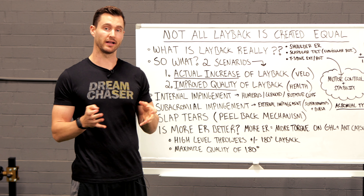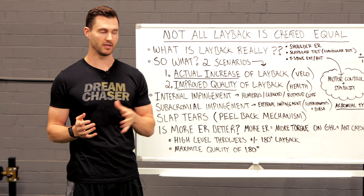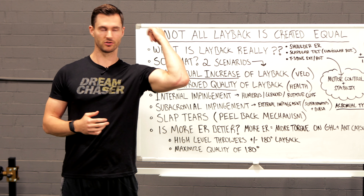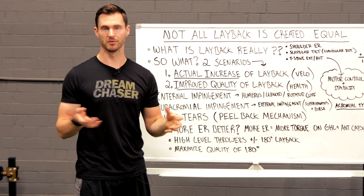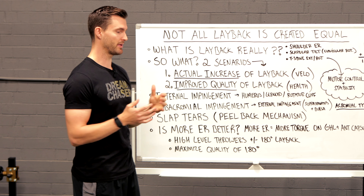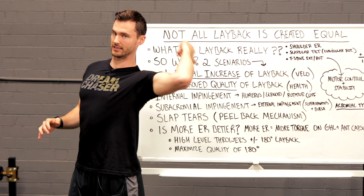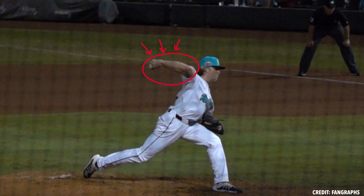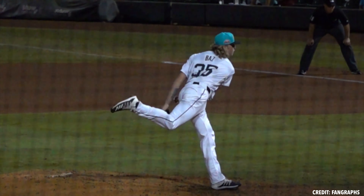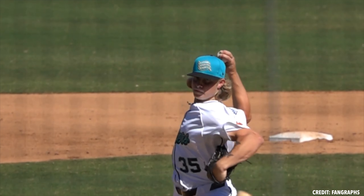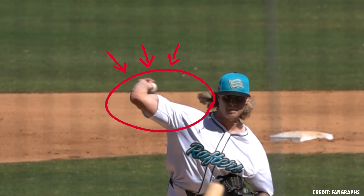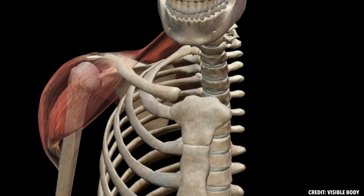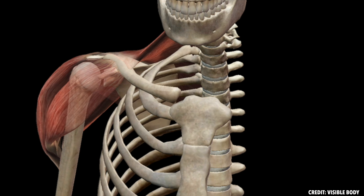We need to understand that layback is actually not the same thing as external rotation of the shoulder. For the first five, six, seven years of my training career, I thought shoulder external rotation was the exact same thing as layback and I used them synonymously for years. The difference is that layback refers to the summation of joint angles — the position you're able to get into at that specific late cocking point. External rotation specifically refers to the motion of the humerus in the glenoid fossa, the ball and socket rotation. That's only actually one piece of layback.